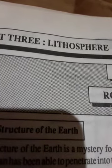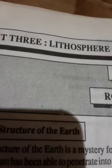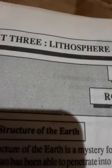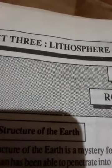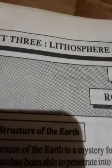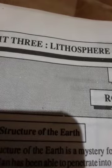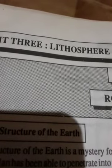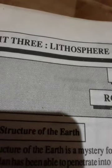In continental areas, the granite and basaltic layers together can reach a thickness of approximately 45 to 48 kilometers. The density of sial is lower than sima. The crust as a whole is thickest beneath the mountains and thinnest under the ocean.